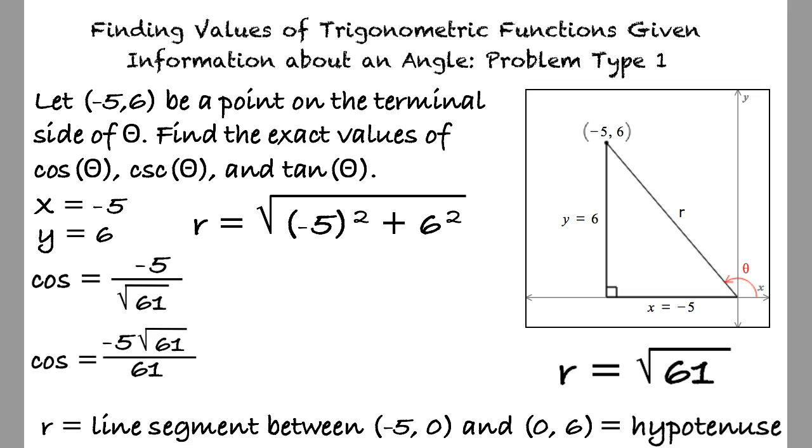Next is the cosecant, which is the hypotenuse over the opposite side. Solving for this yields √61 over 6.